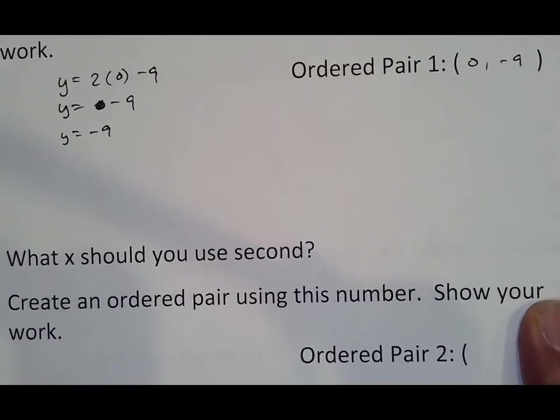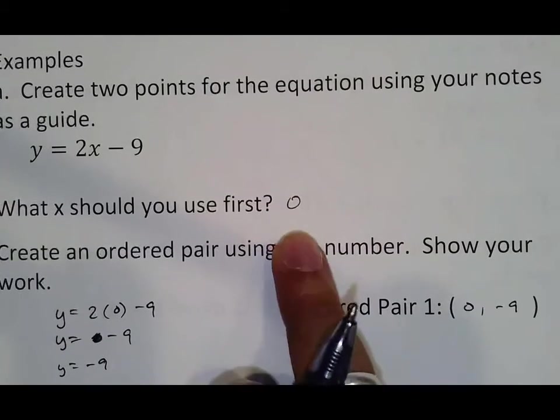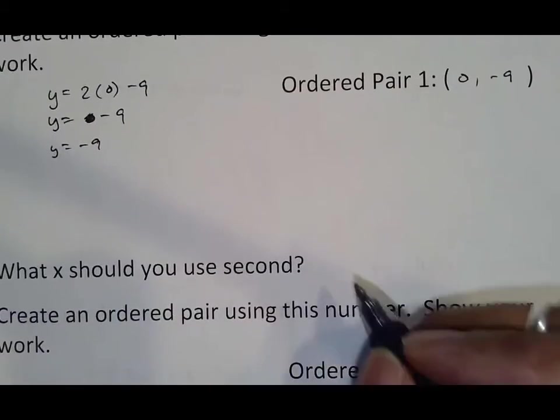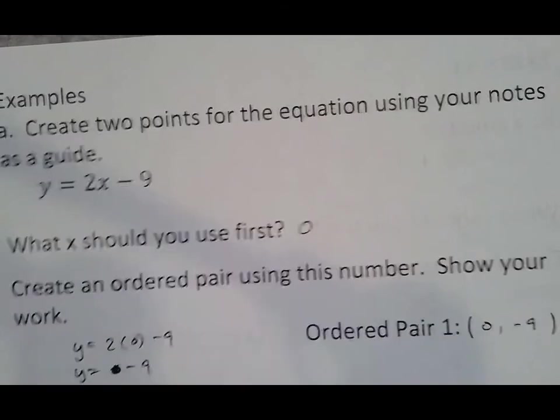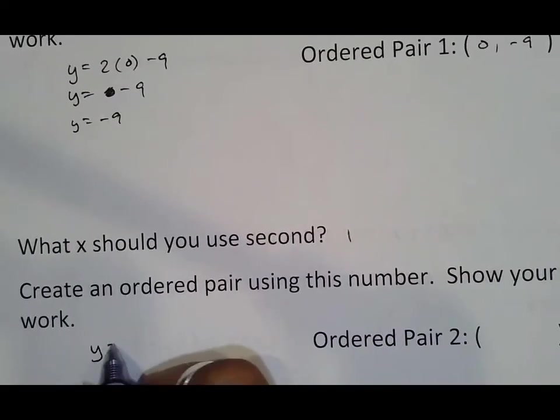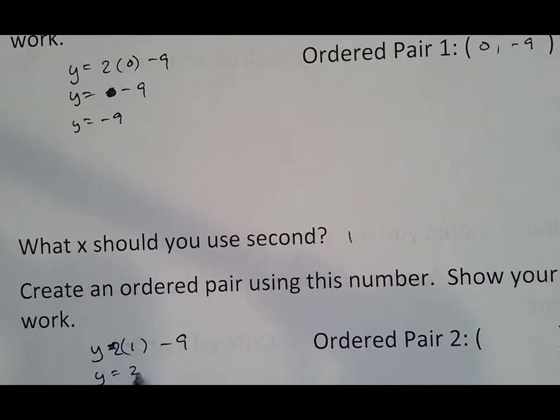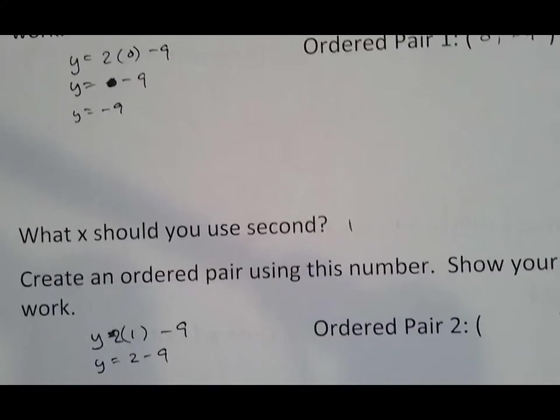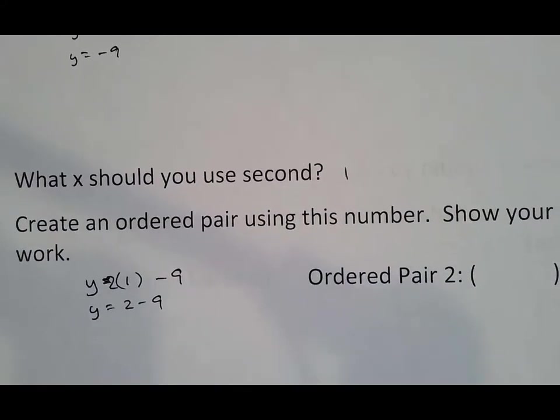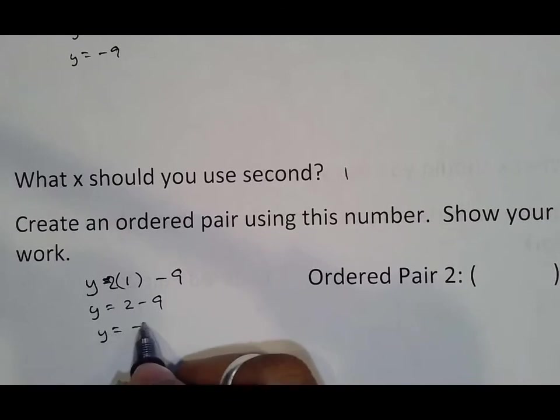What x do you use second? Well, based off of the format, we use 0 first, and then we use 1 second. And so therefore, we are going to take, again, this equation, y equals 2x minus 9, and plug that in there, so 2 parentheses 1 minus 9. Again, the nice thing is 2 times 1 is 2 minus 9. 2 minus 9, if you do that in your calculator, is negative 7.